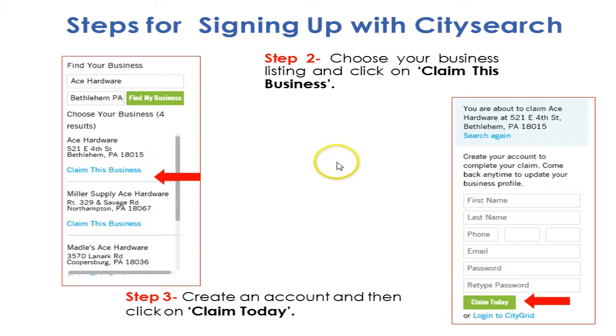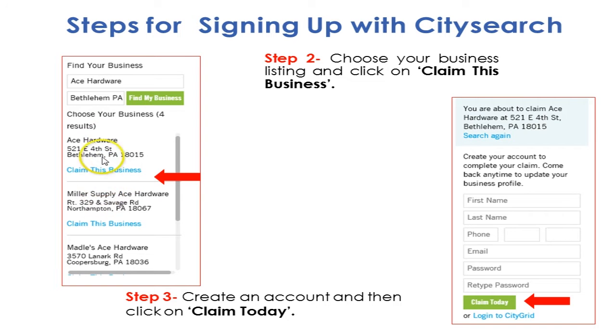Step 2: Choose your business listing and click on Claim This Business. You're looking for your particular business, so click on the one that relates to your business and click Claim This Business.